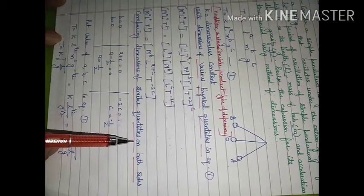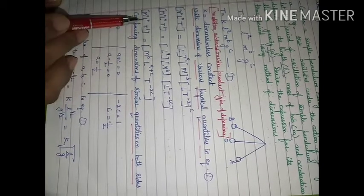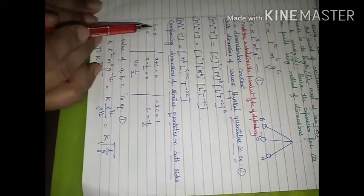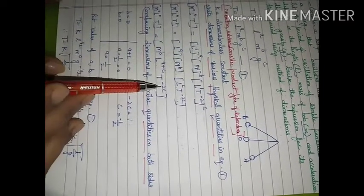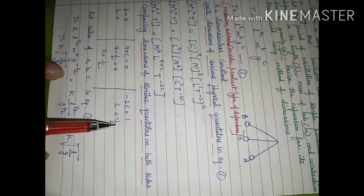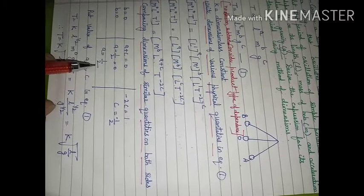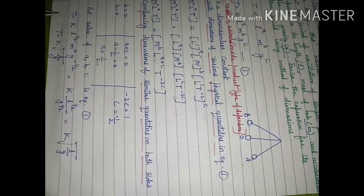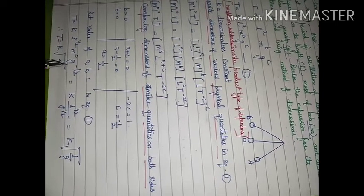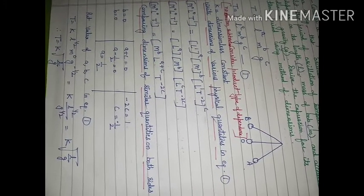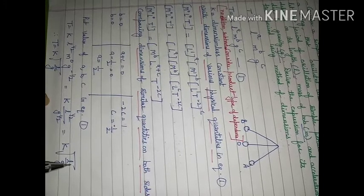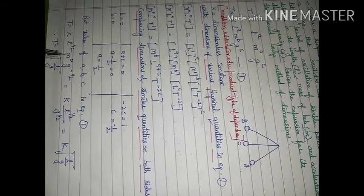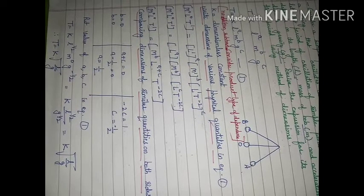Comparing dimensions of similar quantities — mass with mass, length with length, time with time — we get: M raised to power 0 equals M raised to power b, so b = 0; a + c = 0; and −2c = 1, giving c = −½. Substituting c back gives a = ½. Putting these values into the original equation: T = k · L^(½) · M^0 · g^(−½), which simplifies to T = k√(L/g). This is the relation between time period, length, and acceleration due to gravity, and it shows that time period is independent of the mass of the bob.